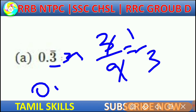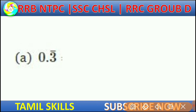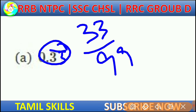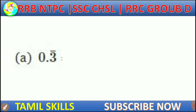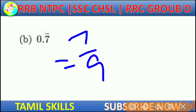Let me check. The number 0.3333 has one repeating digit. So if we convert this, the value simplifies to 1 by 3. Even if written as 33 by 99, it is still 1 by 3.